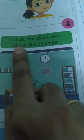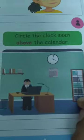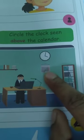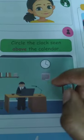Next — circle the clock seen above. What does 'above' mean? Above means the highest place, that means the topmost place. Now, where is the calendar? Here is the calendar. We want to circle the clock — where is the clock? Yes, here — this clock is above the calendar. So we put the circle on the clock.